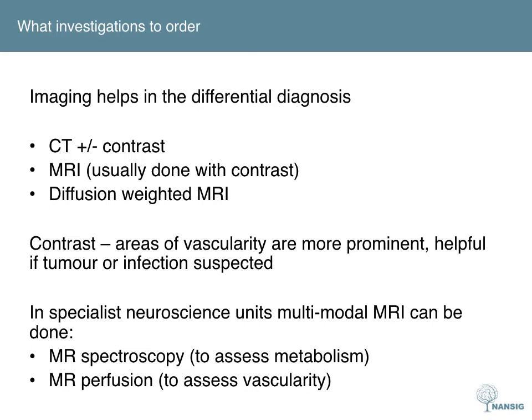In specialist neuroscience centers, multi-modal imaging consisting of specialist MR sequences such as MR spectroscopy or MR perfusion can also be performed. These can help differentiate different types of brain tumors, for example from low to high grade gliomas.